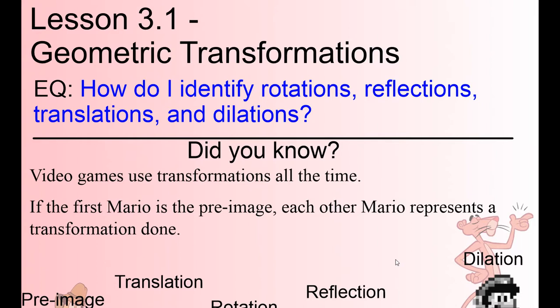So the first lesson's essential question says: how do I identify rotations, reflections, translations, and dilations? Basically, if they give me a picture, how can I figure out the difference between them?